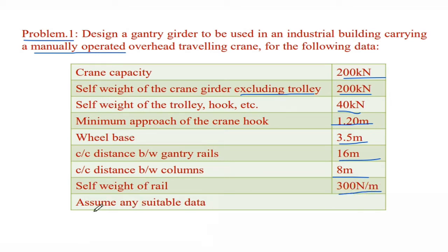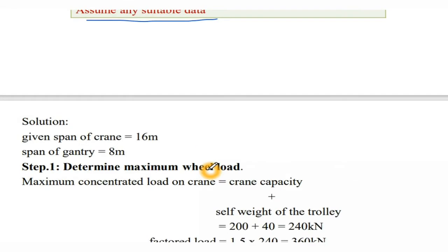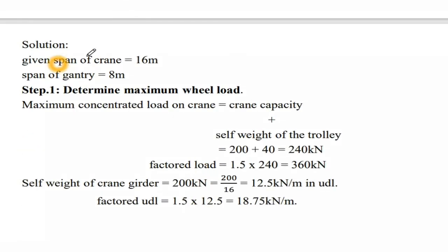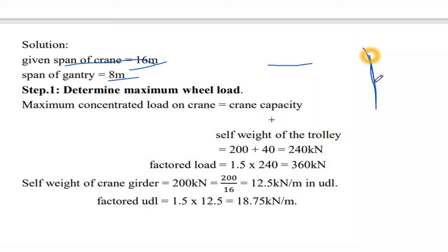Assume any suitable data as needed. Solution: Given — span of crane is 16 m and span of gantry girder is 8 meters. Step 1: Determine maximum wheel load.